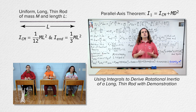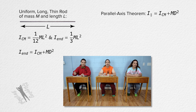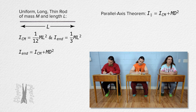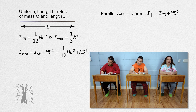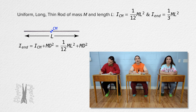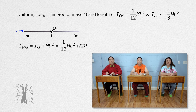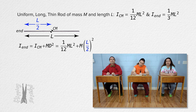The parallel axis theorem states that the rotational inertia about the end of the rod equals the rotational inertia about the center of mass of the rod plus the total mass of the rod times the square of capital D, the distance between the center of mass of the rod and the end of the rod, equals one twelfth total mass times length squared plus total mass times... Well, the center of mass of the uniform density rod is in the middle of the rod and the end of the rod is at the end of the rod. So the distance between those two points equals half of the length of the rod.